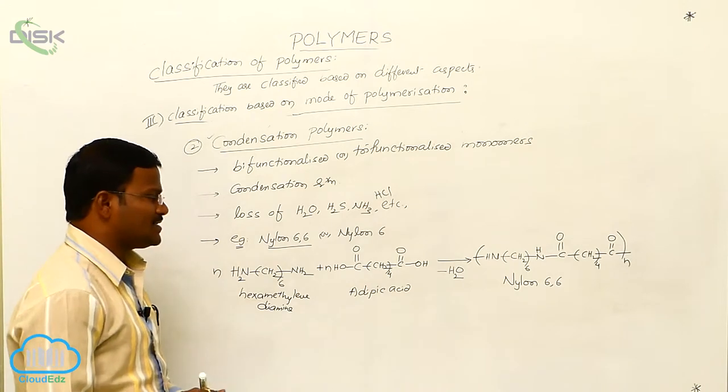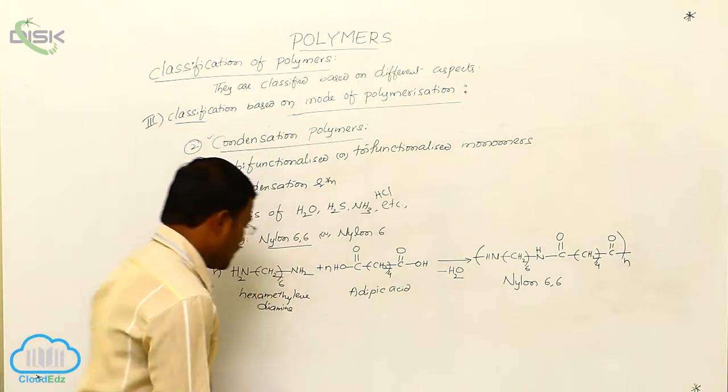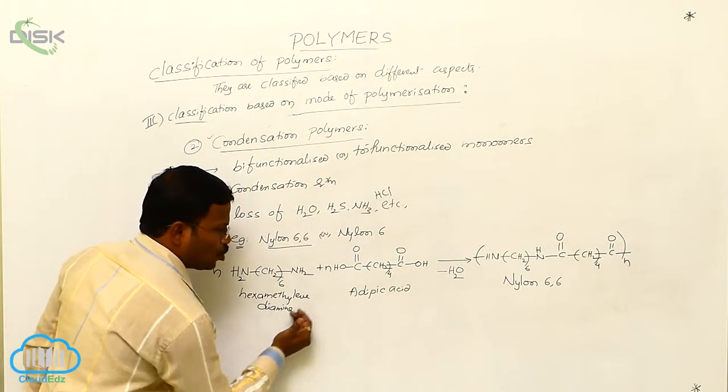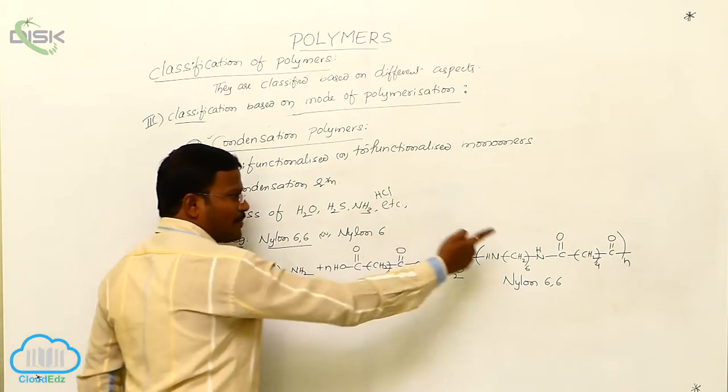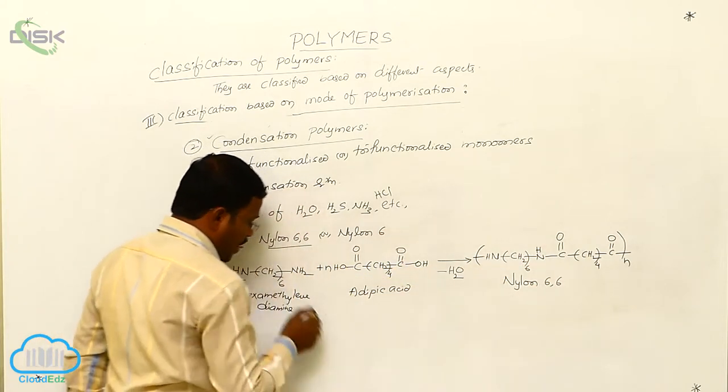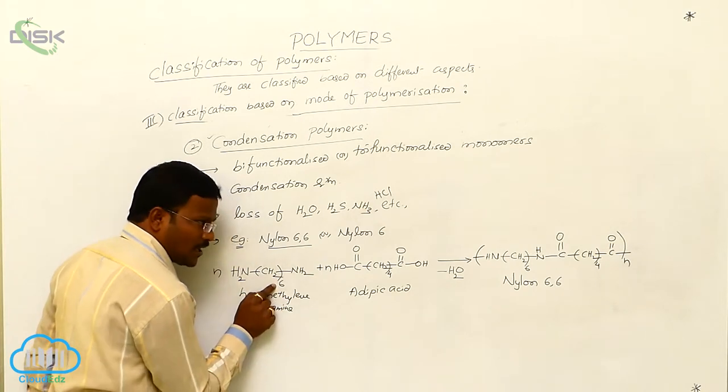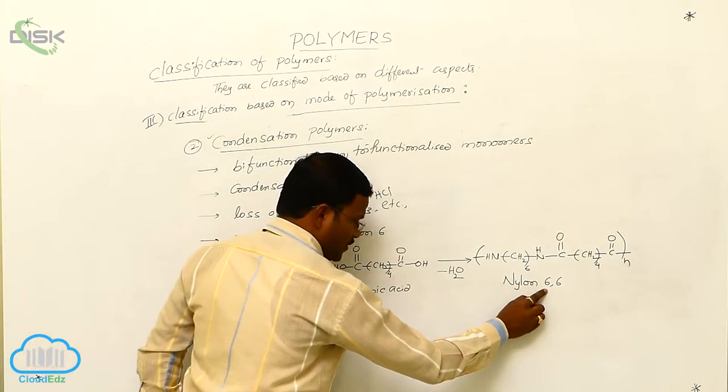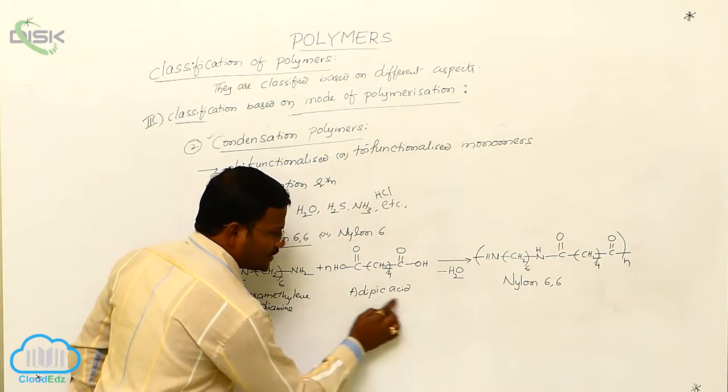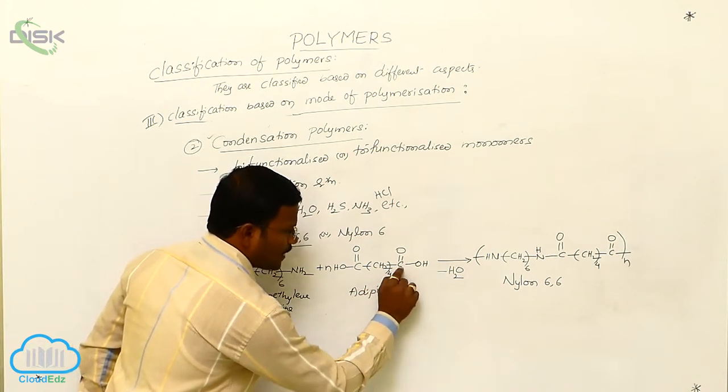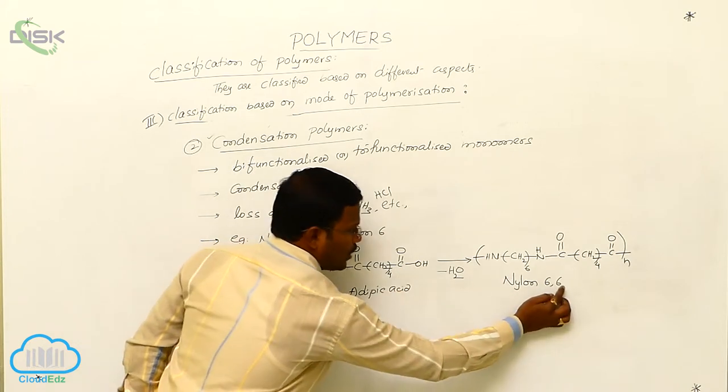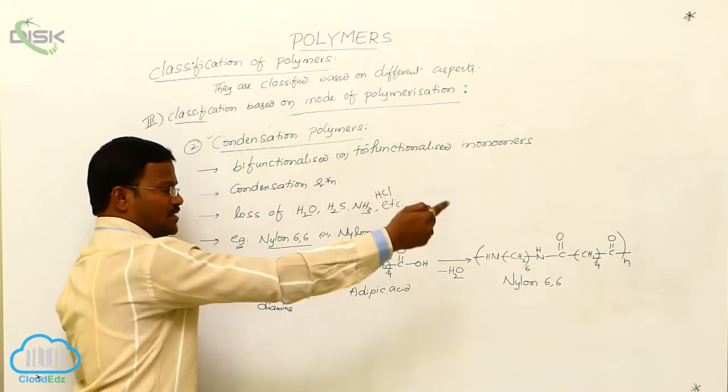Why we have to use 6-6 for nylon? The two different monomers used by us for the formation of this polymer, how many carbon atoms are present in hexamethylenediamine? 6 carbons. Then we have to use the first 6 here. And how many carbon atoms are present in adipic acid? 1 plus 4, 5 plus 1, 6. So one more 6 we have to use here.